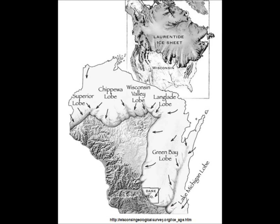About 100,000 years ago, the Laurentide Ice Sheet began to spread across the northern part of the continent. The glacier did not begin to advance into Wisconsin until about 26,000 years ago. The Laurentide Ice Sheet was divided into lobes and named after the area in which the glacier advanced.